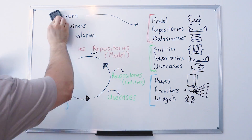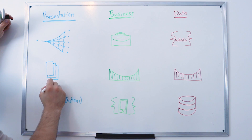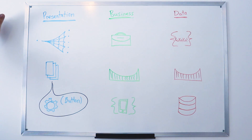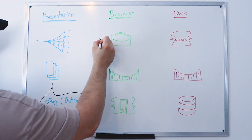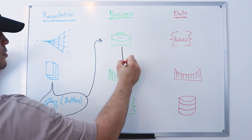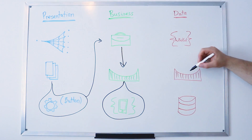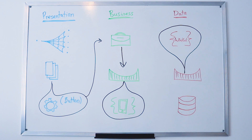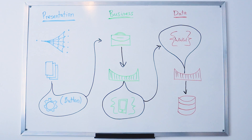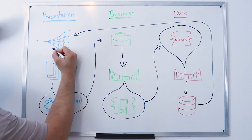Let's look at another way to visualize the clean architecture using the same symbols. The pages in your application contain widgets — for example, a button. When you click the button, it triggers the use cases inside the business layer. To get the data, the use case passes through the bridge of the business layer and into the bridge of the data layer. The bridge in the business layer uses entities; the bridge in the data layer uses models. Finally, the repository inside the data layer accesses the data sources, and the data returns into the provider, which updates the visual of the application.